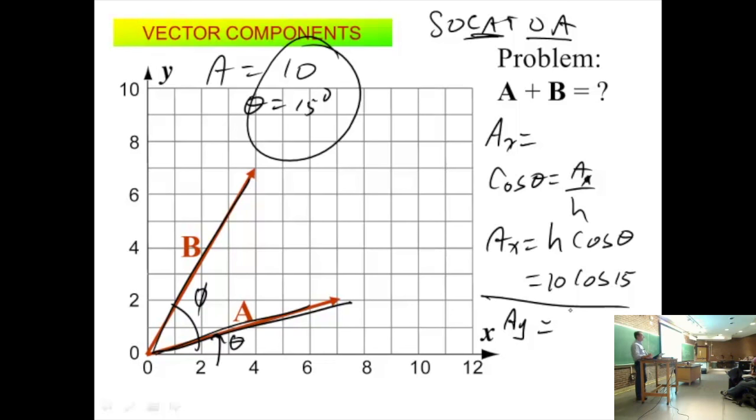My Y component of A, so A sub Y. What is it going to be? It's going to be, what function am I going to use? The sine, right? So it's going to ultimately be A sine theta. A being the number of, that's the 10, the hypotenuse. And whatever that works out to be.